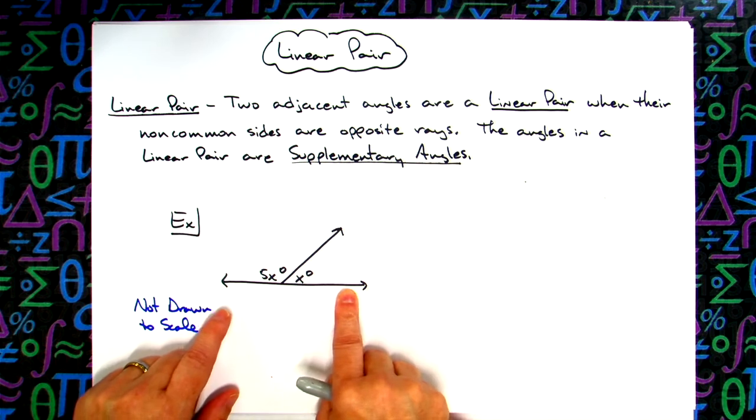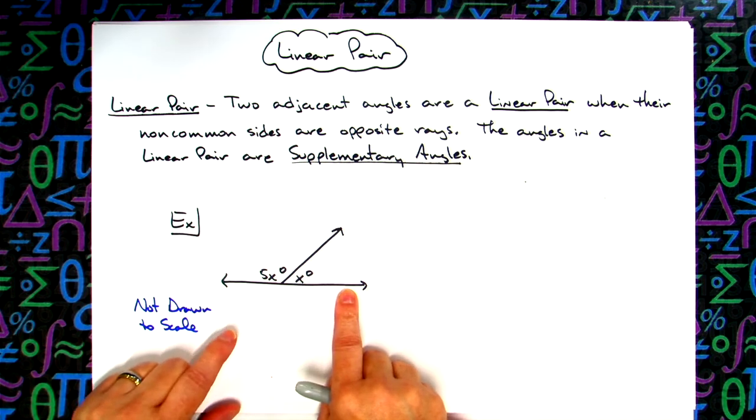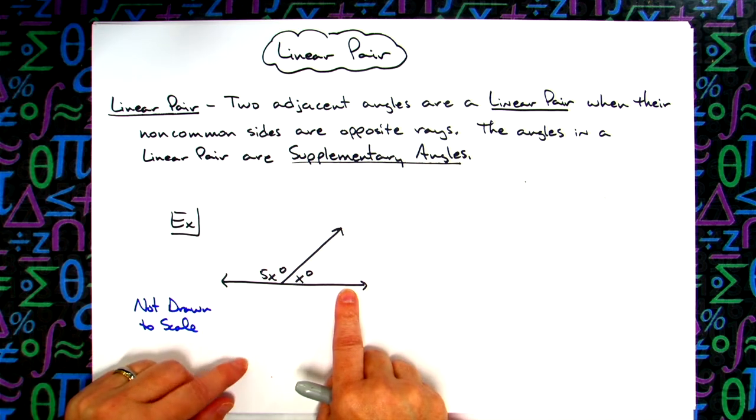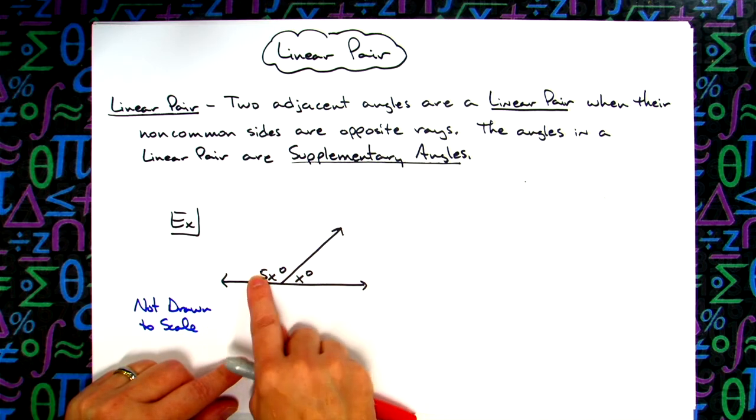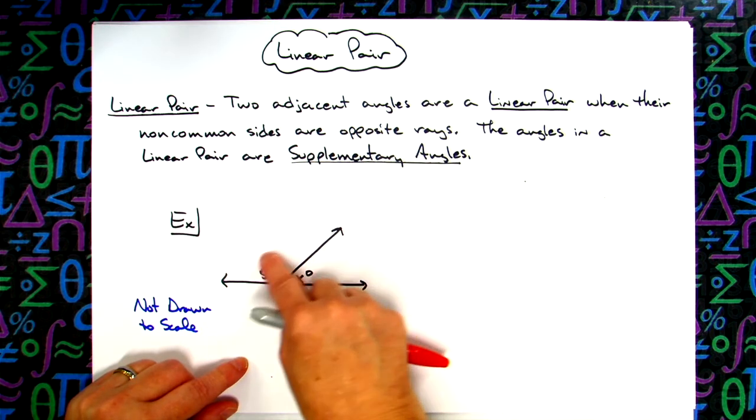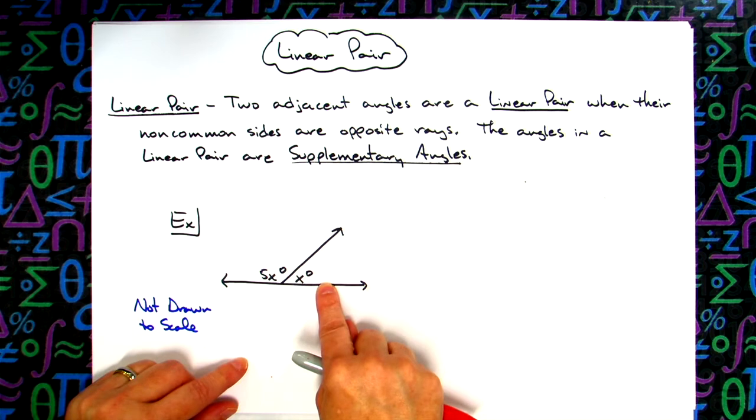Or a straight line here. A linear pair, the angles in a linear pair are supplementary angles because we've got this straight line going here and half of a circle, they add up to 180 degrees.